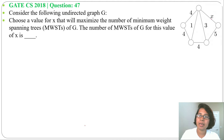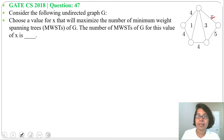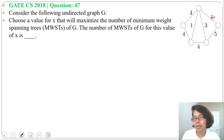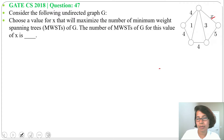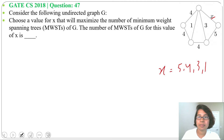There are multiple spanning trees possible if weights are not distinct. The existing weights are 1, 3, 4, and 5, so the x value can be 5, 4, 3, or 1 to create multiple spanning trees. Let me take x equals to 5.